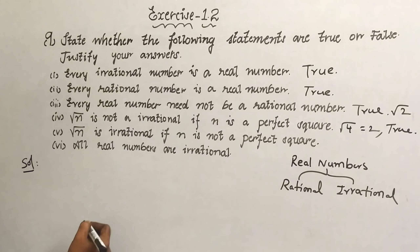Sixth one: all real numbers are irrational. This is false. Because real numbers consist of both rational and irrational numbers — how can all real numbers be irrational? Therefore the statement is false.